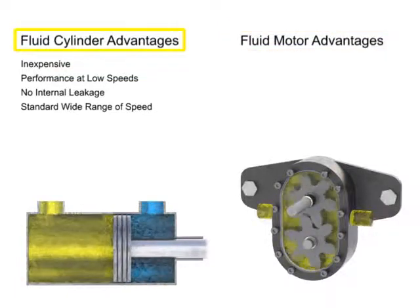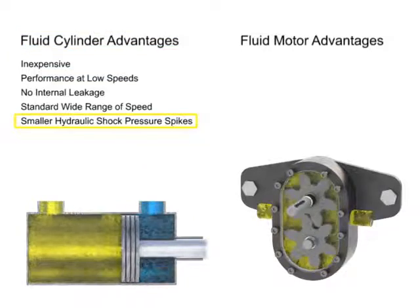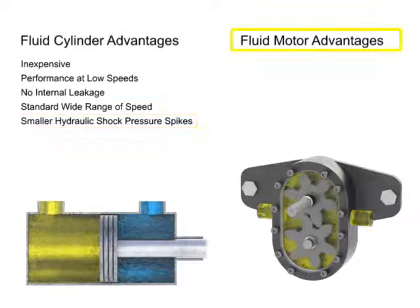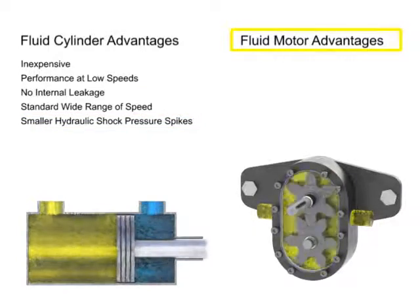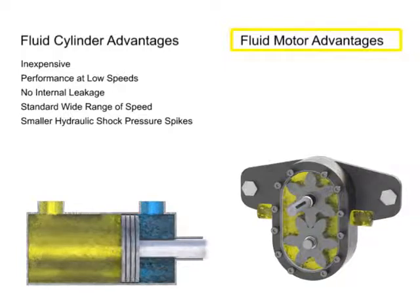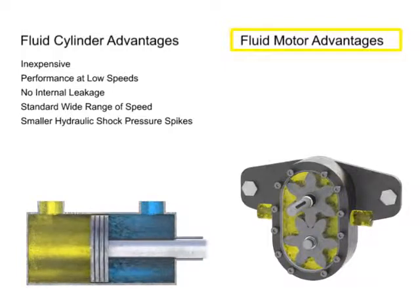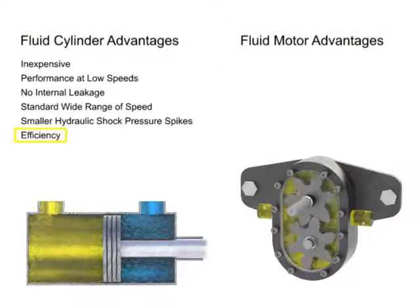Cylinders also produce smaller pressure spikes, called hydraulic shock, when stopped suddenly. Fluid motors tend to produce a much larger amount of hydraulic shock if stopped suddenly, due to the momentum energy contained in their rapidly rotating loads. Finally, cylinders are much more efficient than the typical fluid motor.